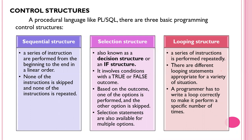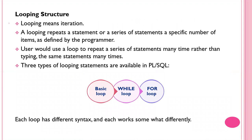Welcome. We are looking at the control structure chapter in PL/SQL. We have already covered the sequential structure and selection structure. Today we will see the looping structure. A looping structure is a series of instructions that are performed or executed repeatedly. The programmer has to write the loop correctly to make it perform a particular task and execute a specific number of times.